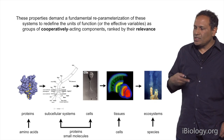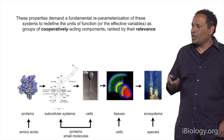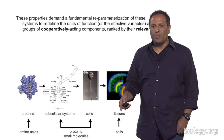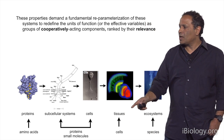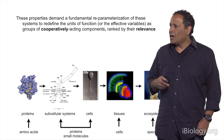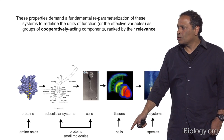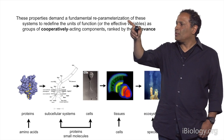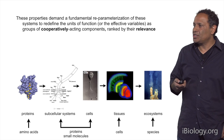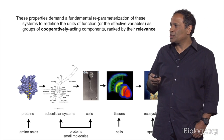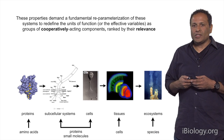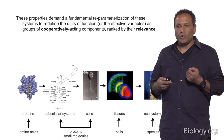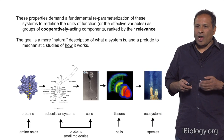The existence of these properties — the fact that components like amino acids in proteins, proteins in macromolecular complexes, cells in tissues, and species in ecosystems involve heterogeneous and cooperative groups — implies that we need a fundamental reparameterization of these systems to redefine the units of function, or what I will call the effective variables: not individual parts, but groups of parts that act cooperatively, ideally ranked by their relevance. The question is, how can we do that?